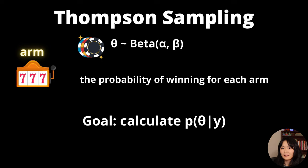Based on the Bayes rule, we can calculate the posterior distribution of theta, which is proportional to the likelihood function times the prior.